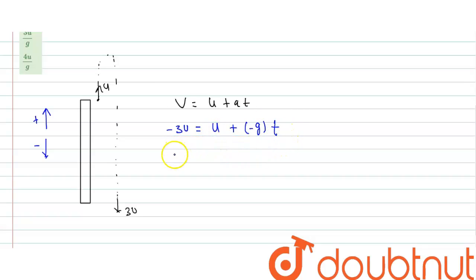Now, this is equals to minus 3u minus u. Minus 4u equals minus g into t. So, time taken by ball to strike the ground is 4u upon g.